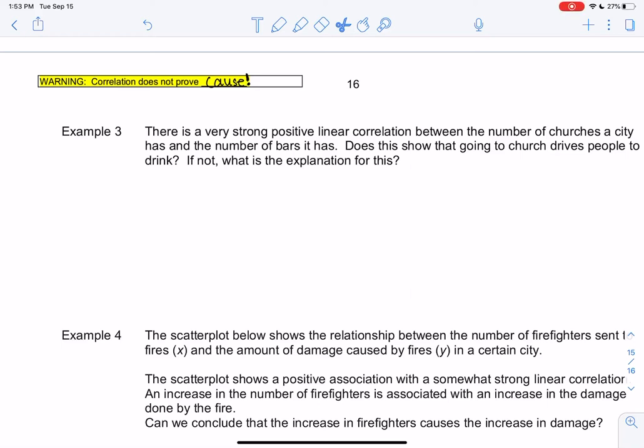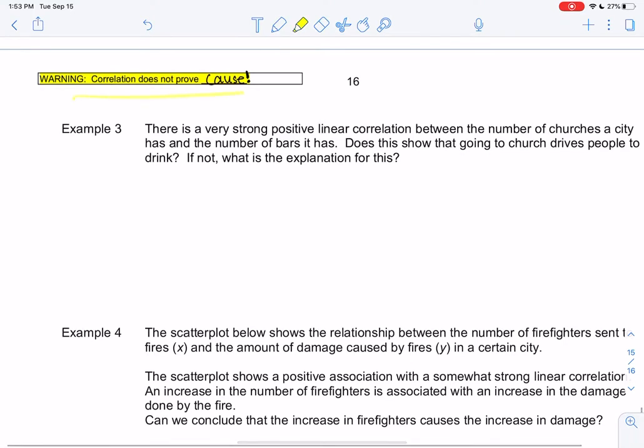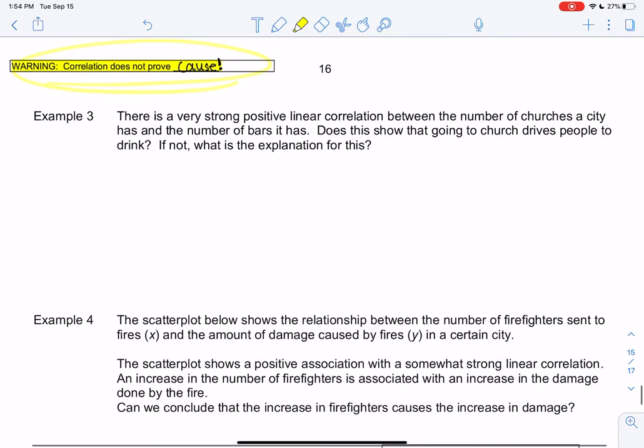All right, a few more examples for our last section, 4-4 correlation. I just copy and pasted this because I wanted to go over this a little bit more. Correlation does not prove cause. Just because two things have a relationship does not mean they are causing each other. We talked about this a little bit back in chapter 1, but let's look at some examples to make sense of this.